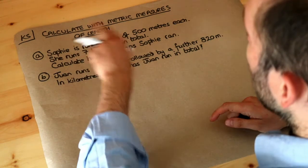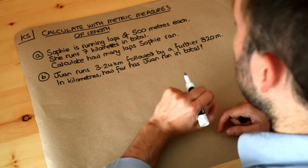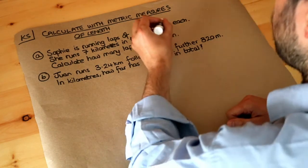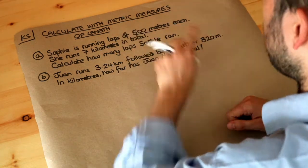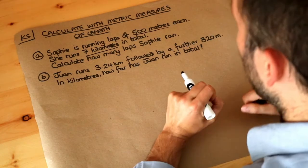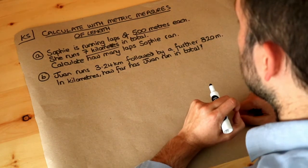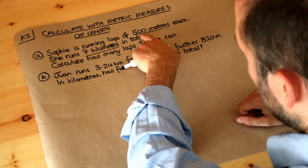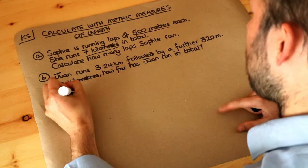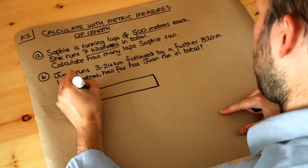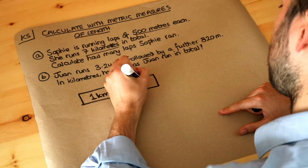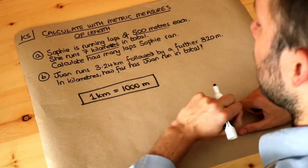The key to any worded problem involving lengths is that you need to ensure that everything is using the same unit. We've got two different units here — something in metres and something in kilometres. So we need to use the same unit, and it's easier to put them in the smaller unit of metres. Remember the conversion: one kilometre is equal to a thousand metres. The 'kilo' prefix means a thousand.